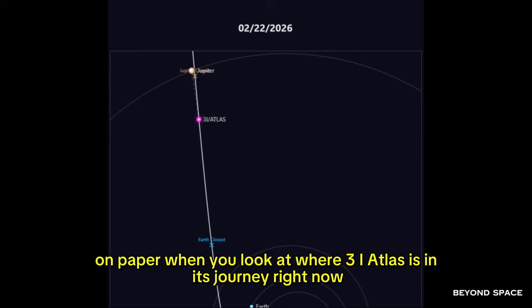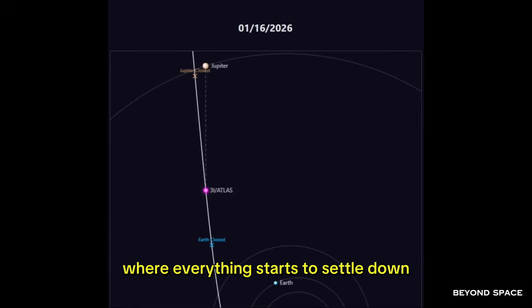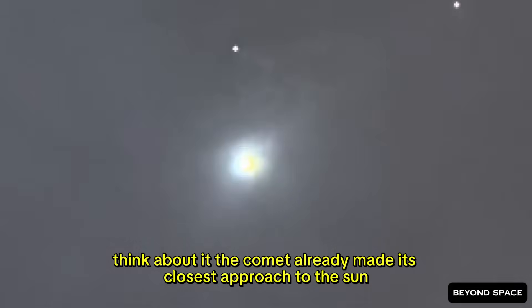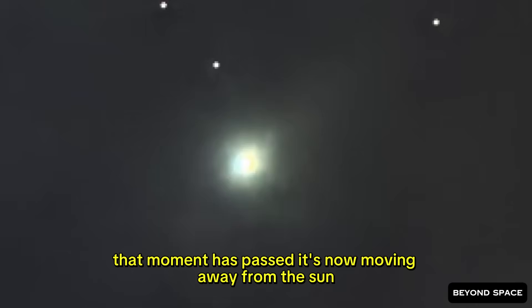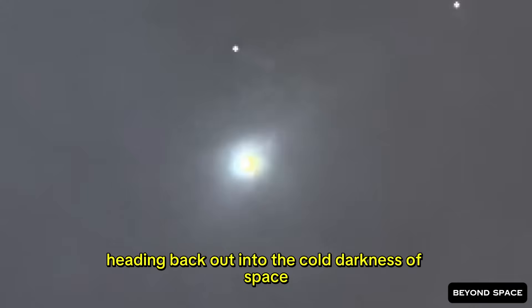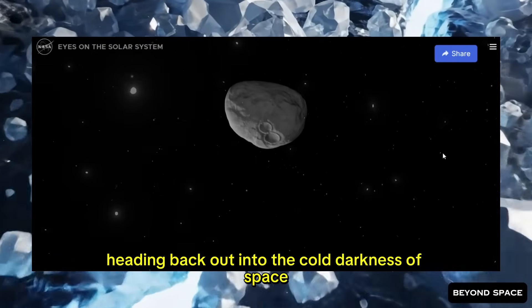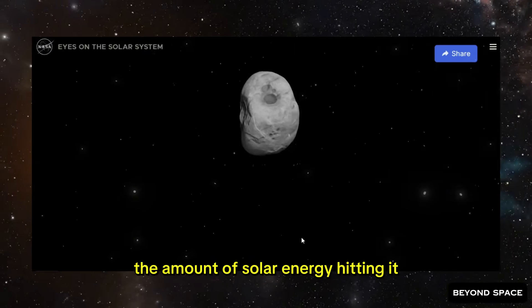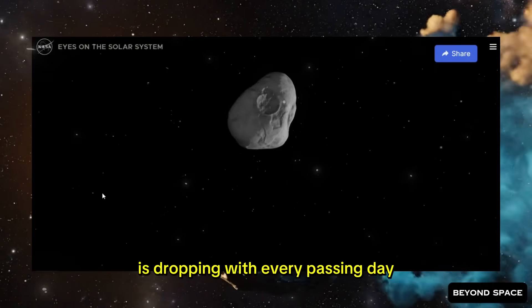Now, on paper, when you look at where 3i Atlas is in its journey right now, this should have been the part of the story where everything starts to settle down. Think about it. The comet already made its closest approach to the sun. That moment has passed. It's now moving away from the sun, heading back out into the cold darkness of space. The amount of solar energy hitting it is dropping with every passing day.